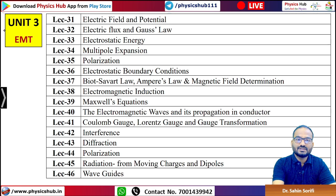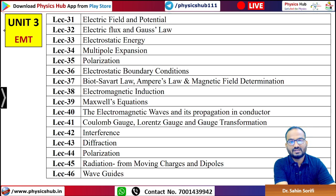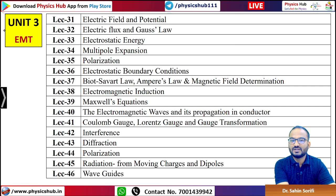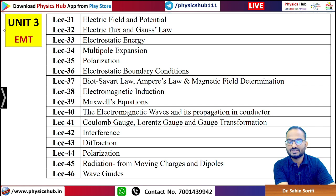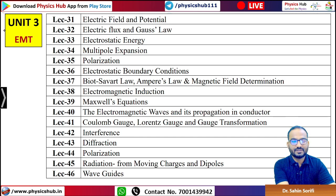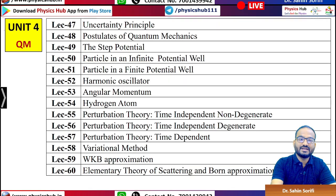Unit 3 consists of Electromagnetic Theory — electric field and potential, electric flux, Gauss's law, electrostatic energy, multipole expansion, polarization, boundary conditions, Biot-Savart's law, Ampere's law, magnetic field determination, electromagnetic induction, Maxwell's equations, electromagnetic wave propagation in conductors, Coulomb gauge, Lorenz gauge, gauge transformation, interference, diffraction, polarization, radiation from moving charges and dipoles, and waveguides.